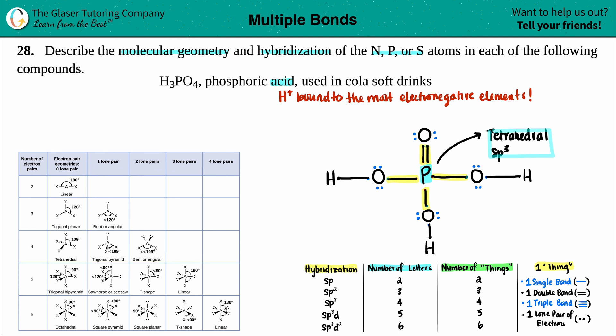The final answer: the phosphorus in H₃PO₄ is tetrahedral with sp³ hybridization. Let me know in the comments what you think. Subscribe to the channel — we're almost at 30,000 subscribers, and it's all because of you. Keep learning, keep studying hard, good luck on your tests and quizzes, and I'll talk to you in later lessons!